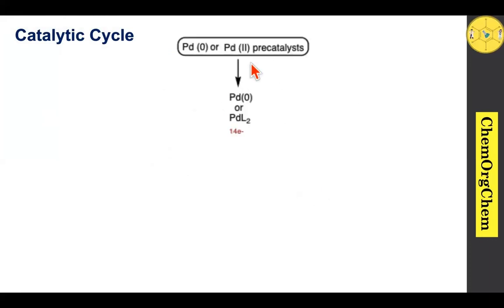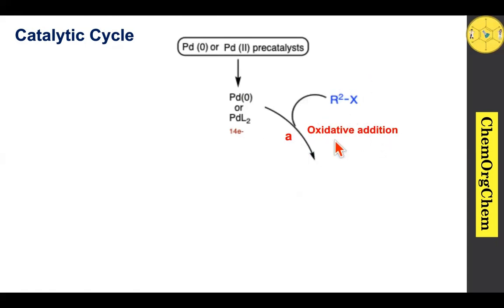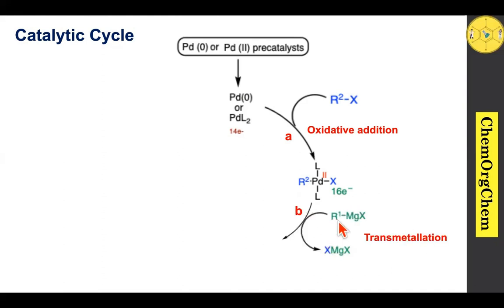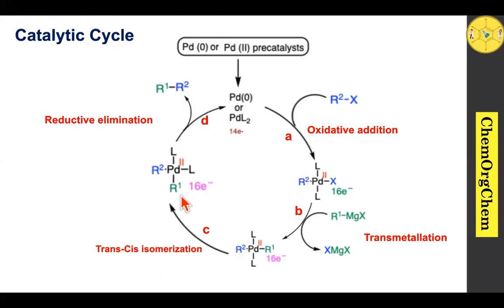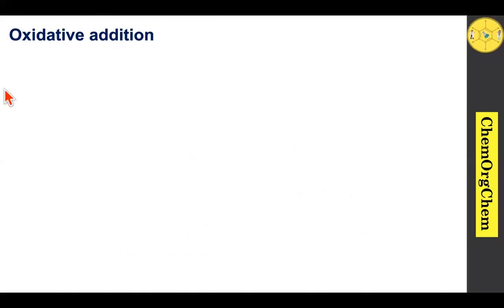Moving on to the palladium-based catalytic cycle: when you take either palladium(0) or a palladium(2+) pre-catalyst, it produces the corresponding active catalyst. The active catalyst undergoes oxidative addition with an organohalide to give a 16-electron species. This undergoes transmetalation with the Grignard reagent, then trans-cis isomerization, followed by reductive elimination to produce the carbon-carbon coupling product and regenerate palladium(0) for another catalytic cycle.